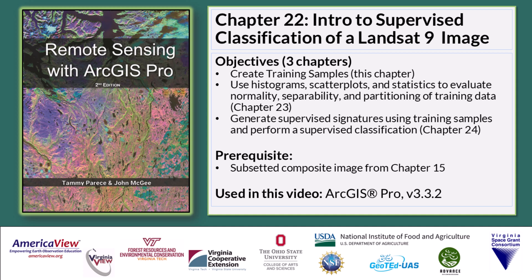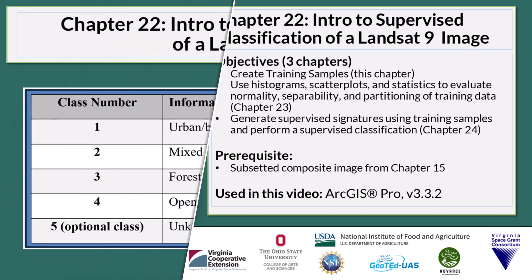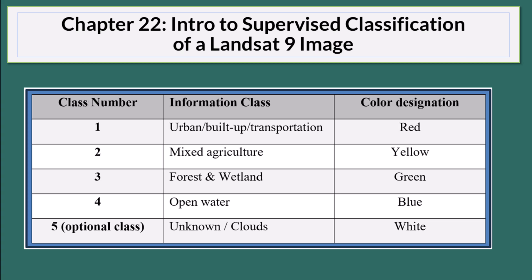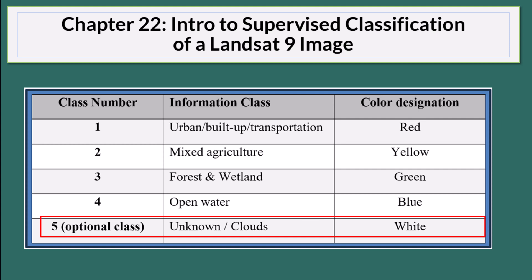See your text for an in-depth discussion on the details of performing a supervised classification. We'll divide this topic into three chapters. In this first chapter, we'll introduce classification schemes available in ArcGIS Pro and create training samples to use in the classification. We'll be using the same informational classes that we used in the chapter on unsupervised classification, Chapter 21. Notice that we've added an optional fifth class, demonstrated in Chapter 21, for the clouds that are in this image.